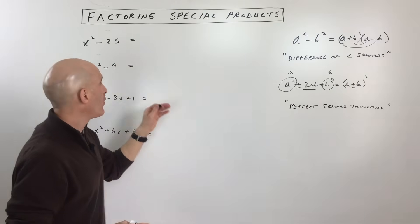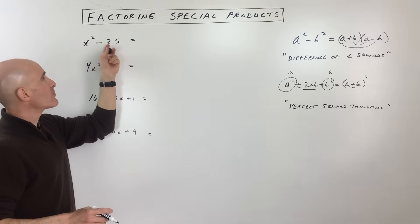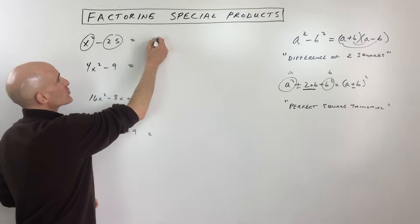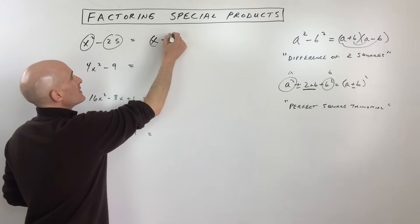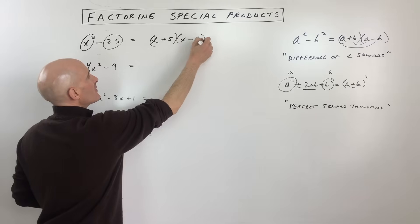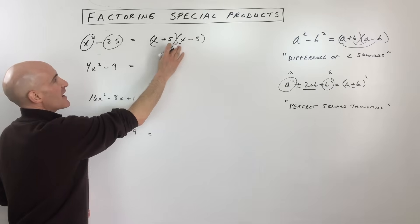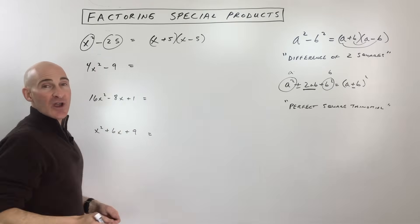Let's go through some examples. x² - 25, we can see this is a perfect square minus a perfect square, so we factor it as (x + 5)(x - 5). I just took the square root of 25, which is 5, and the square root of x², which is x. One you're adding, one you're subtracting.